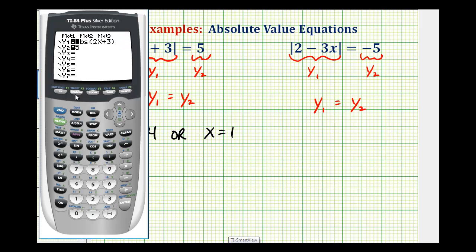So we'll press y equals. We'll go ahead and clear these again and just start from the beginning. So again we're going to press math, right arrow once, and then enter for absolute value. And then we'll type in 2 minus 3x, close the parenthesis, press enter, and then y2 is equal to negative 5.